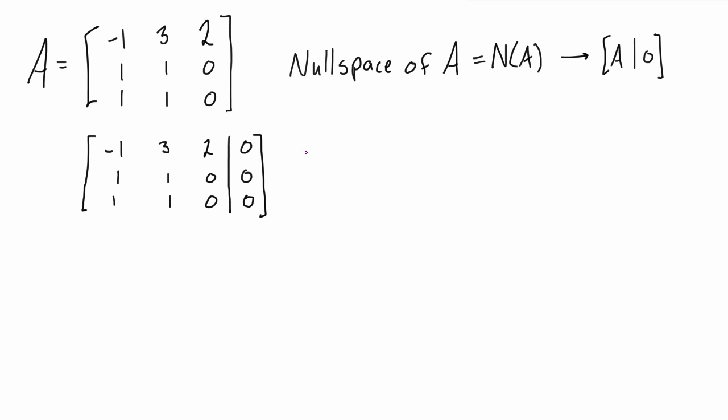And this also represents the equation where we have A times this vector x is equal to the zero vector, or expanded out it's the same where we have A here and x here and then again the zero vector. We can solve this augmented matrix by finding the reduced row echelon form of it.